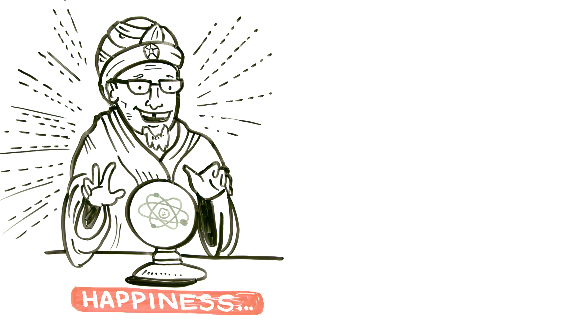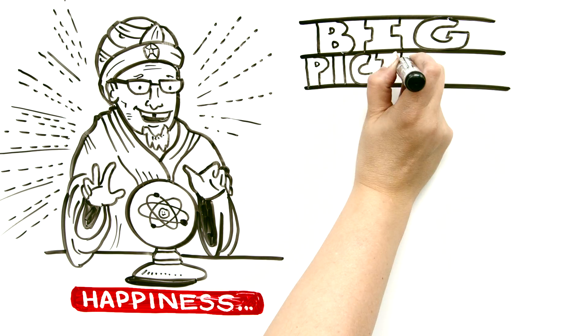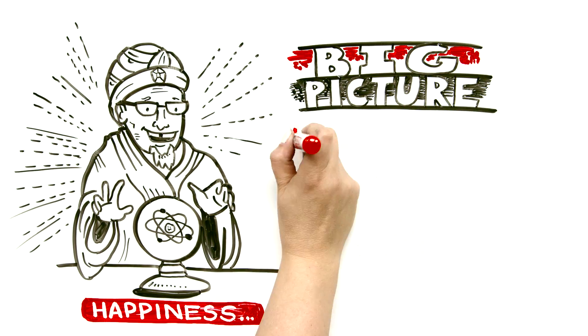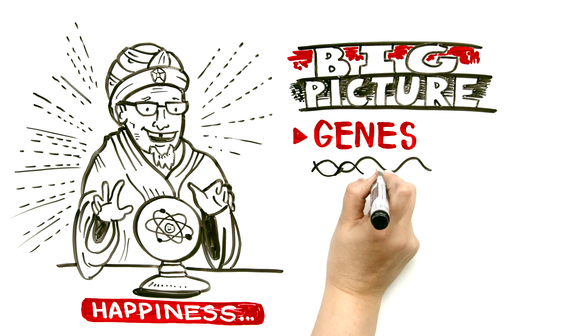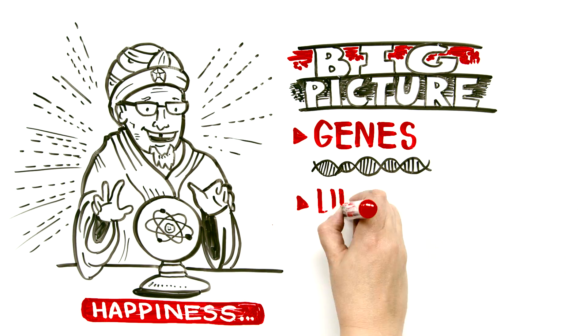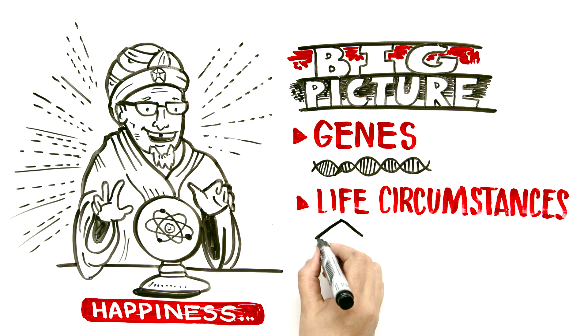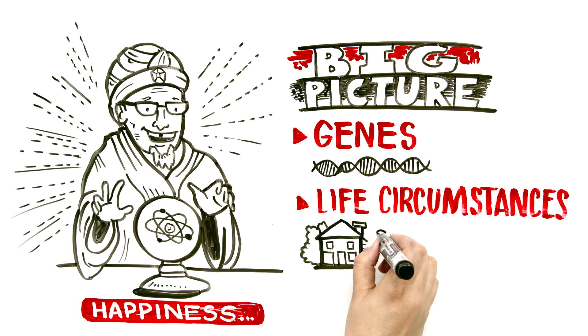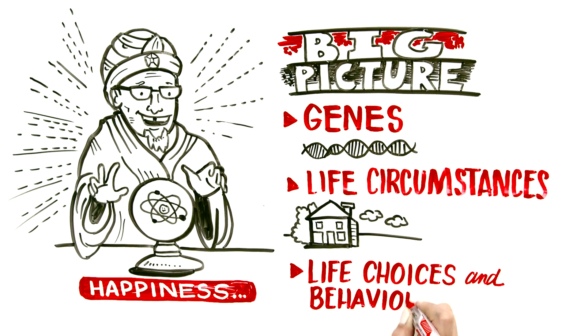First is what predicts it? Well, the research points to a lot of factors, but three big picture players. First are your genes, your temperament or personality. Second are your life circumstances, things like wealth, where you live, health. Third are your life choices and behaviors.